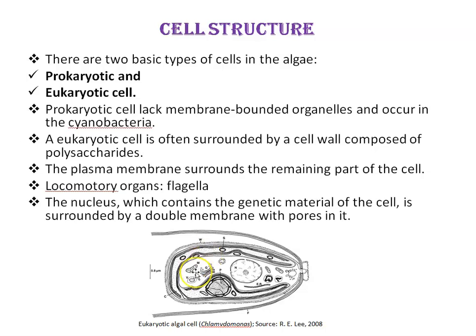Membrane-bounded structures in the cell include mitochondria, vacuole, Golgi bodies, nucleus, endoplasmic reticulum, and flagella. The flagella are locomotory organs that propel the cell through the medium by their beating. The nucleus, which contains the genetic material of the cell, is surrounded by a double membrane with pores in it.